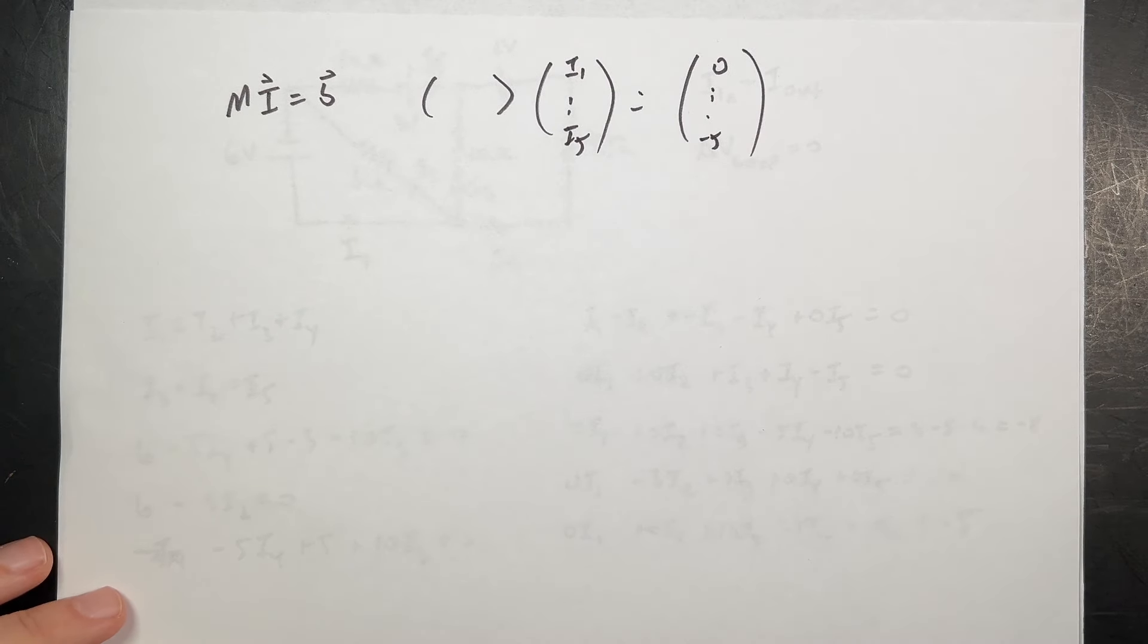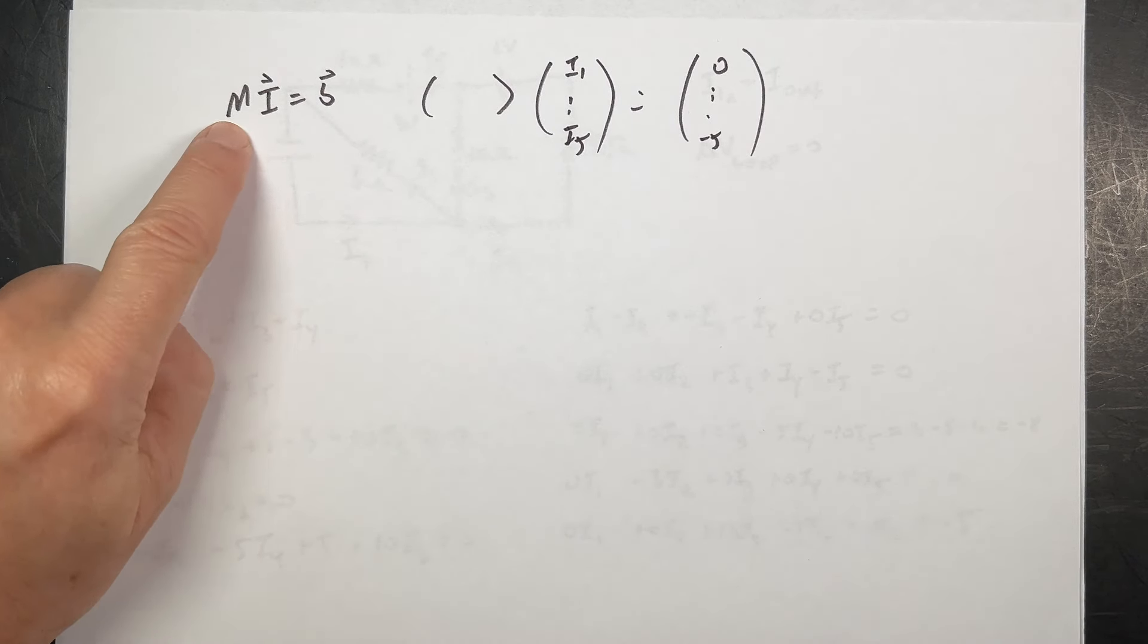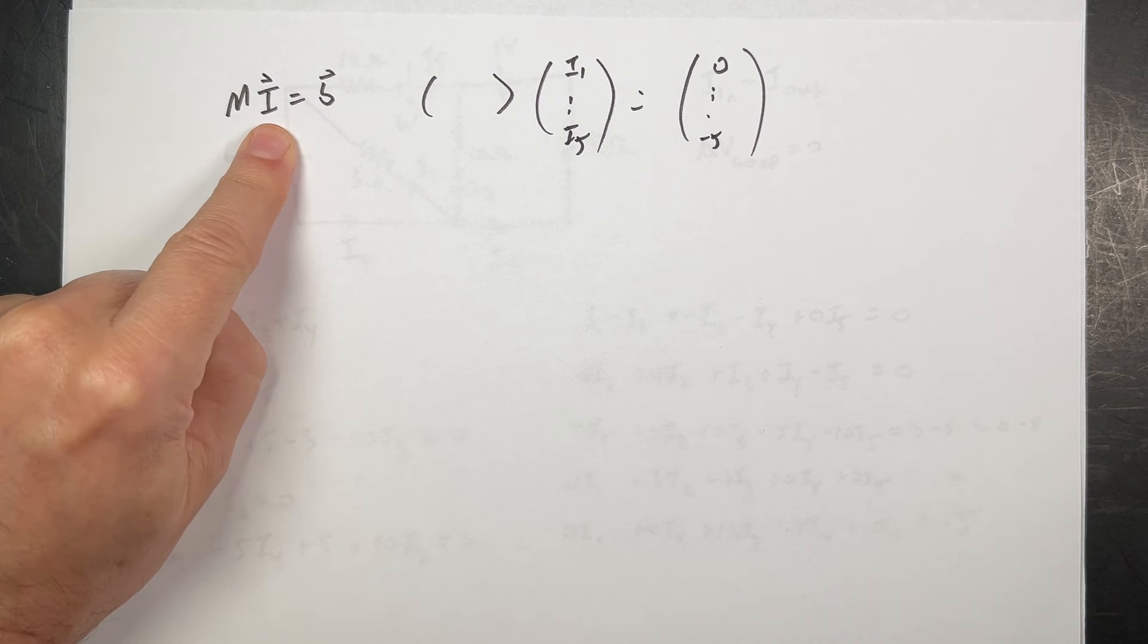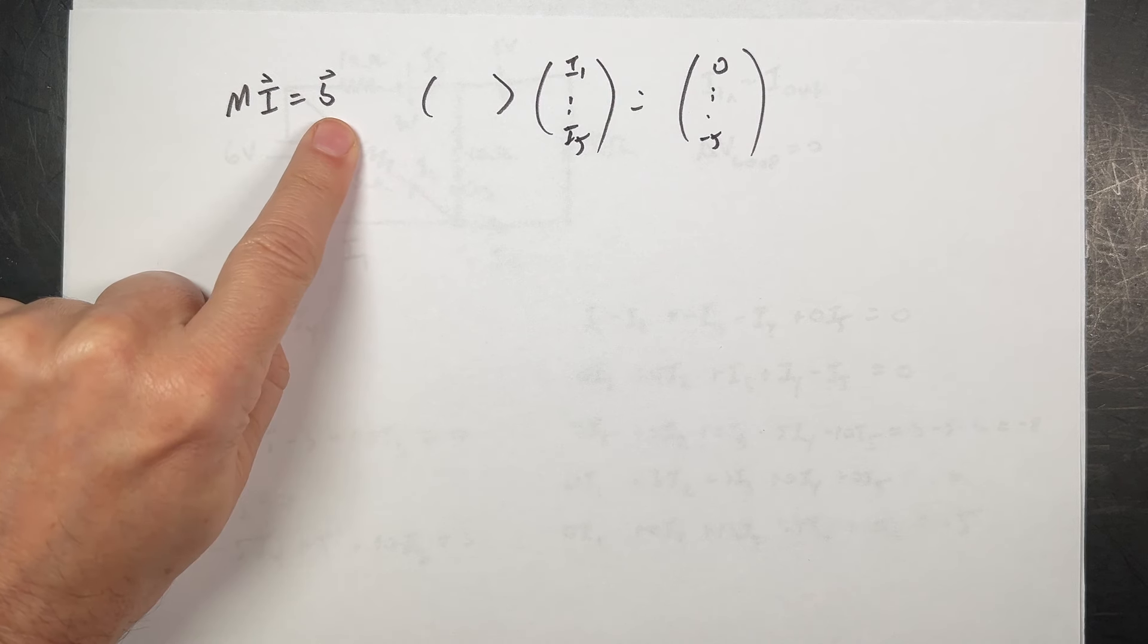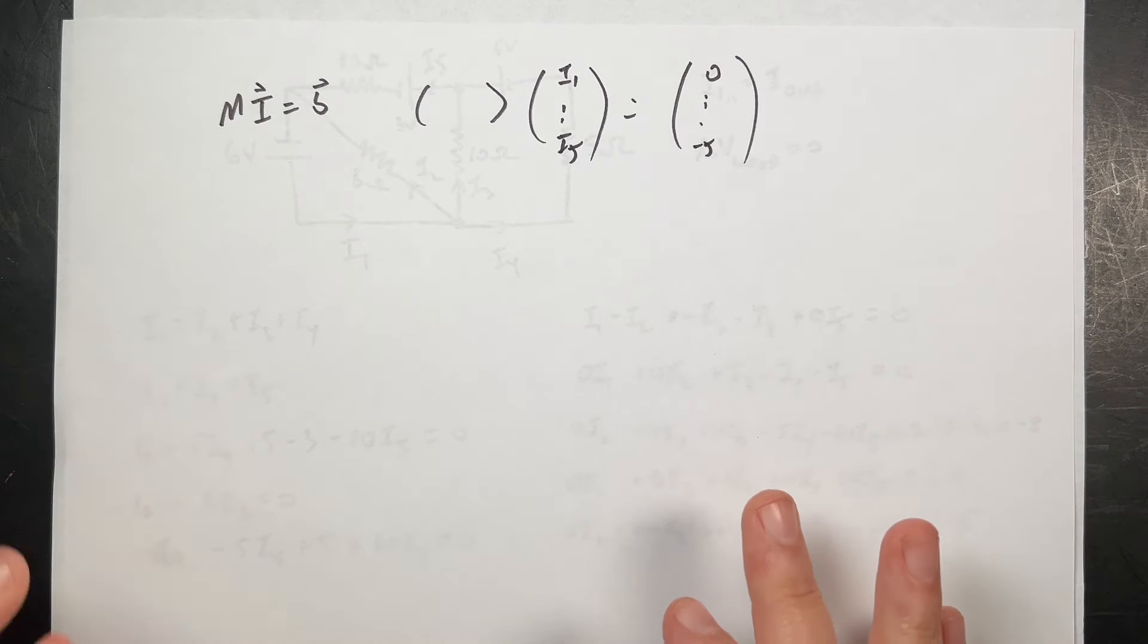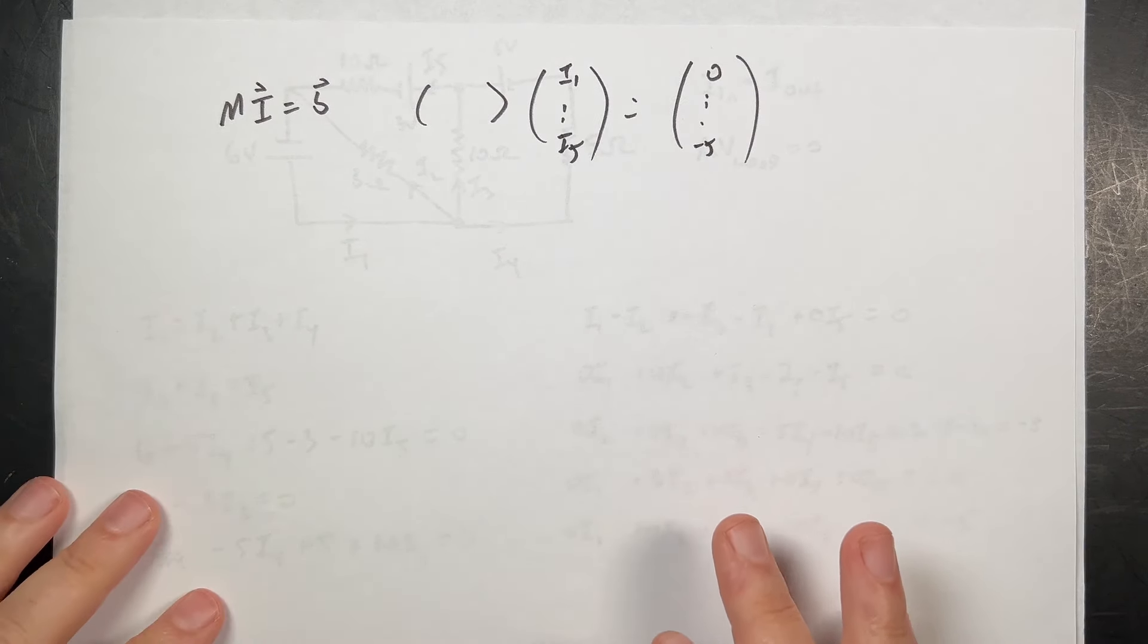So if you think about this, we can actually write this as the following. I can write this as the matrix M multiplied by a current vector I is equal to a result vector B. So imagine that I have some matrix right here. I'm going to write it in short form, and then I have I1 to I5 as my vector, and that's going to be equal to these constants right over here, zero to negative five. So I can write this system of linear equations as a five by five matrix, a five by one vector, and then a five by one vector.